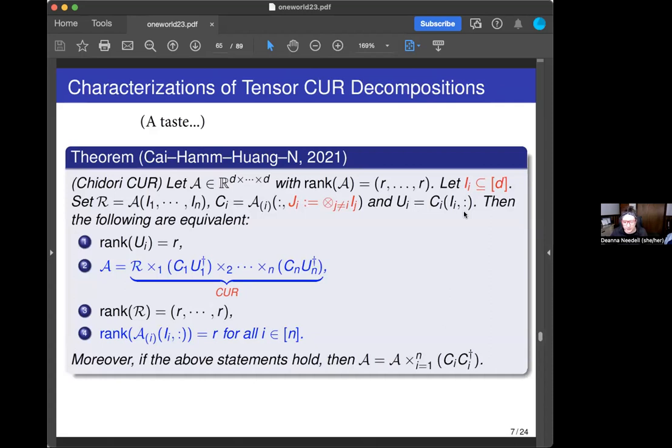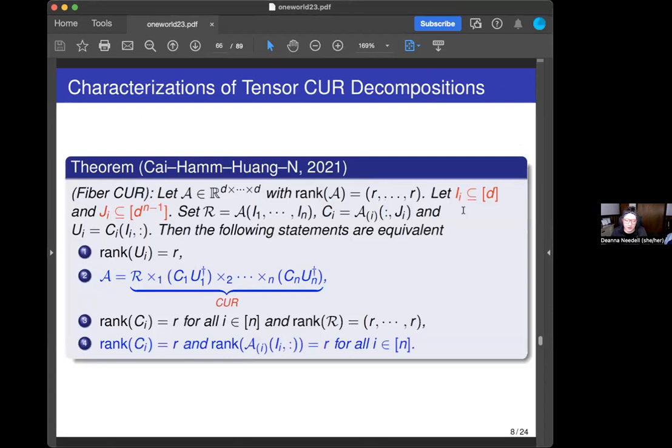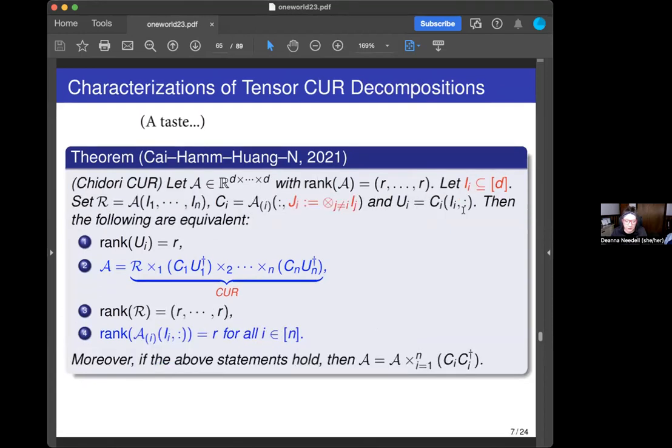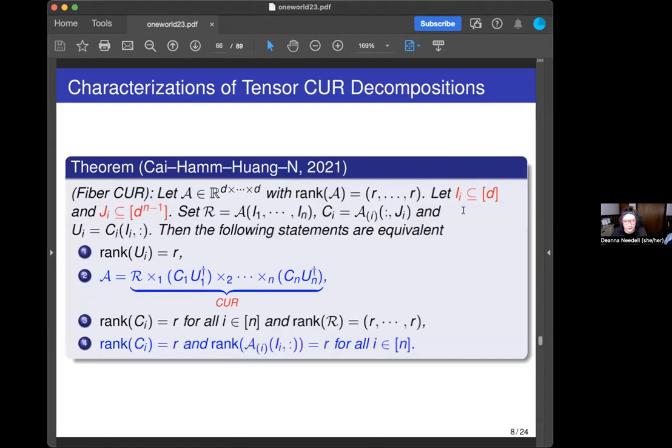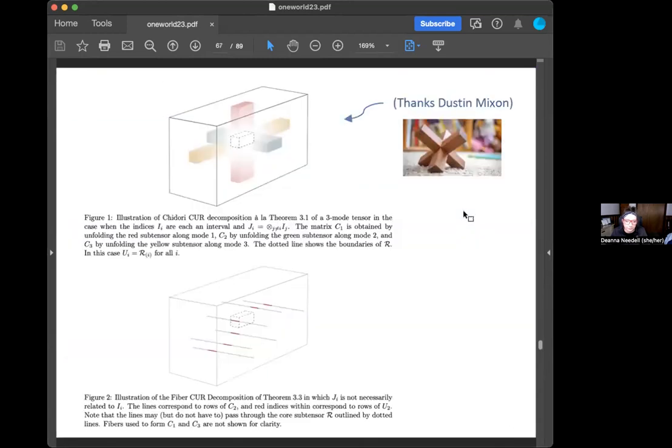These are our definitions and our results for what the decomposition gives you. It looks like, am I going to read all this slide? I'm not. I'll skip over this. It's just a taste of what the theorem looks like. I'll show you in a picture what the tensor decomposition looks like. There are two of them. This is what we call a Chidori CUR and this is what we call a Fiber CUR. But I think it's easier just to see in photos.